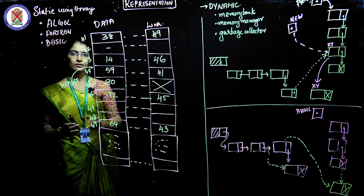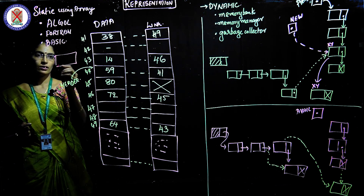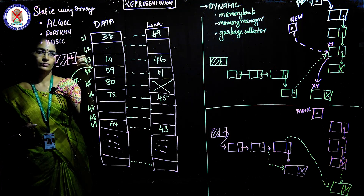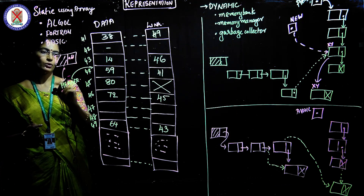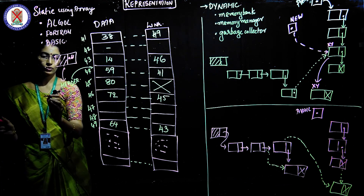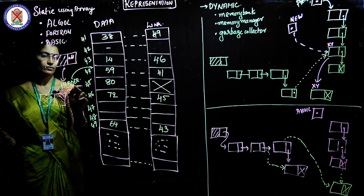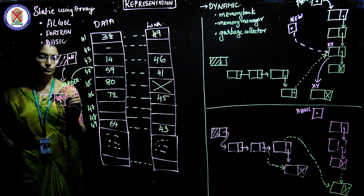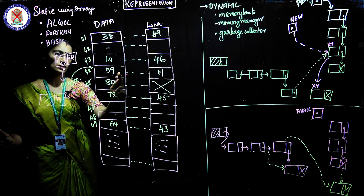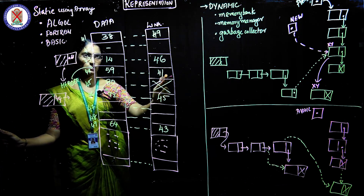A linked list usually starts with a node called the header node. The header node has no data part — instead it holds the address of the first node. For example, the header points to the first node at address 44, where the data value is 59. Node 59 has the link address 41, which is the address of the second element with data value 38.